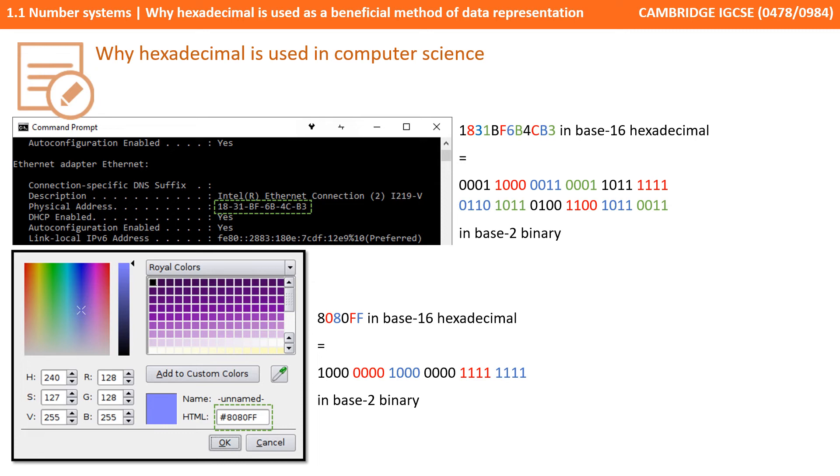Likewise it's quite common to represent 24 bit colours using a group of 6 hexadecimal digits. And again it's much easier to represent these colours in hex because binary would be a much longer sequence of digits.